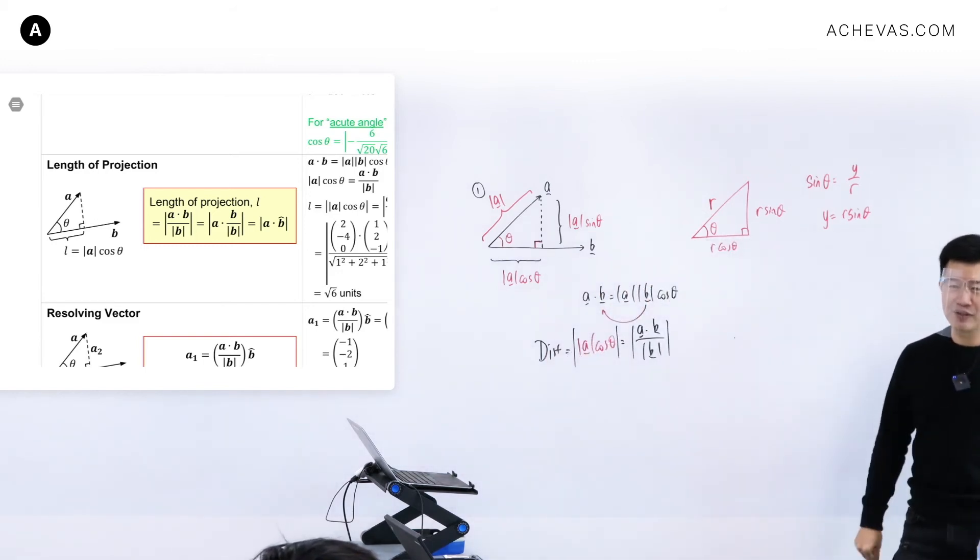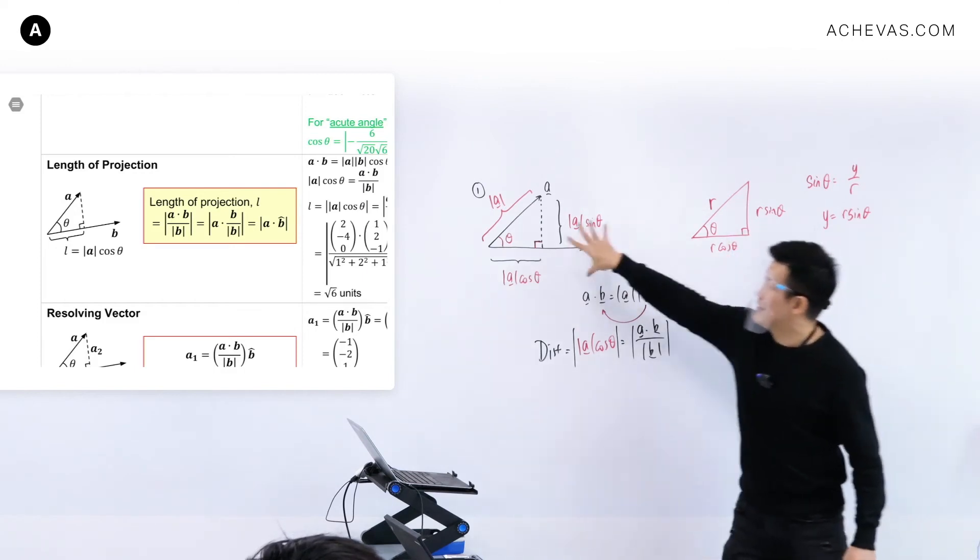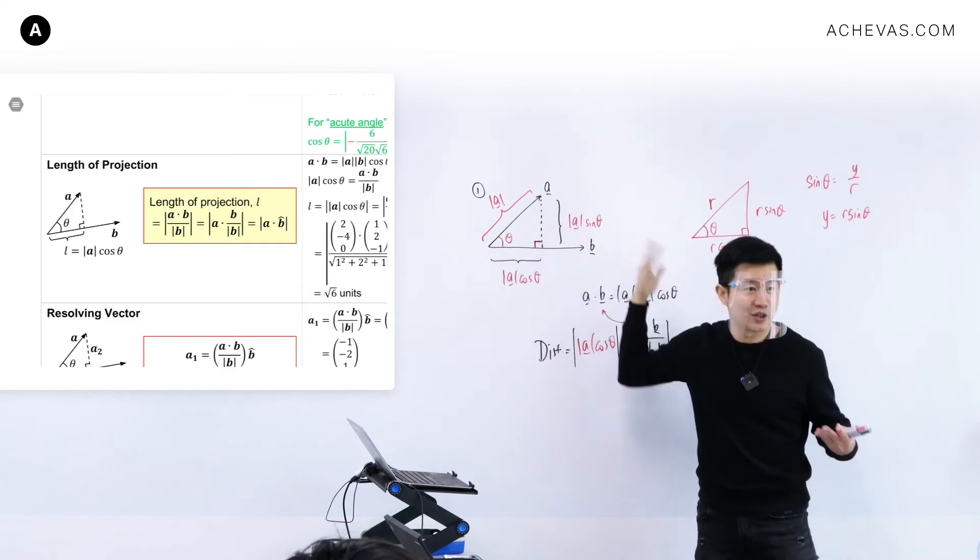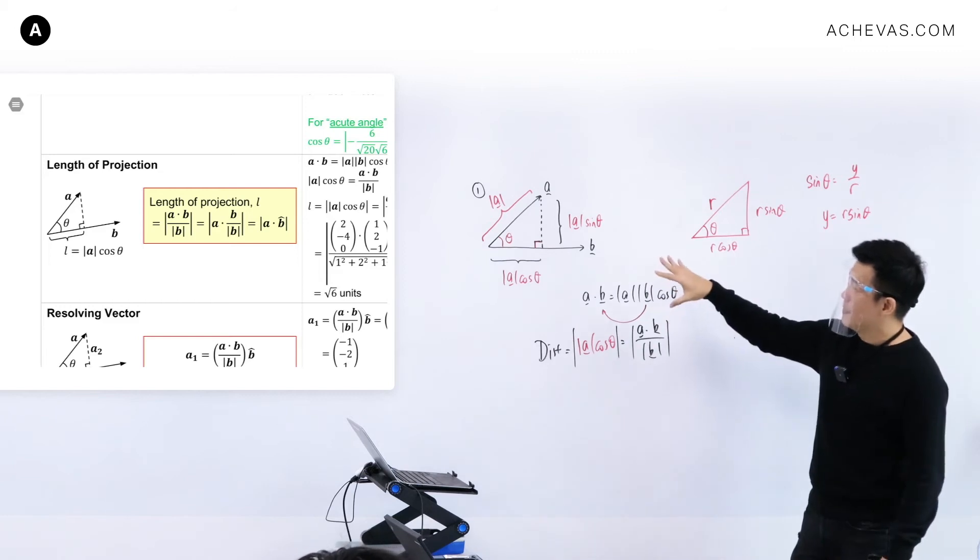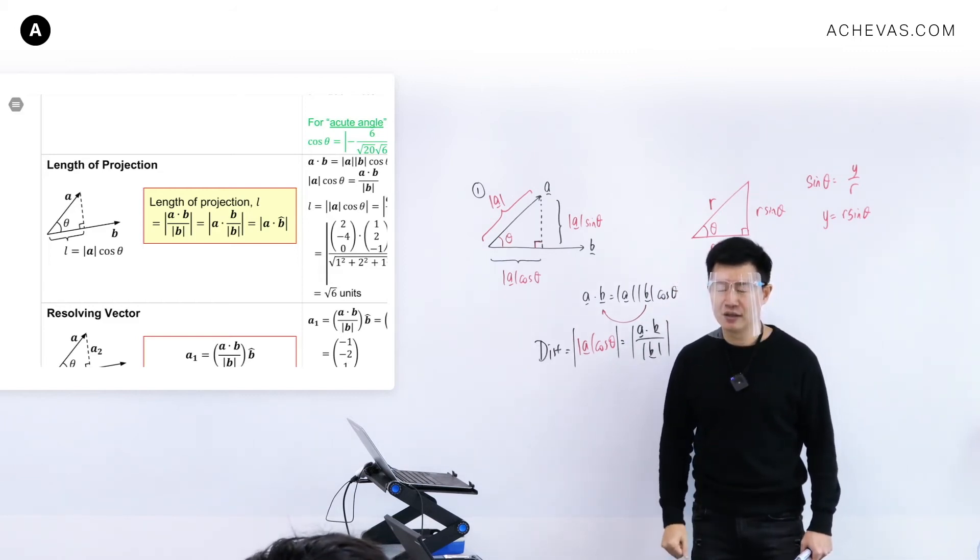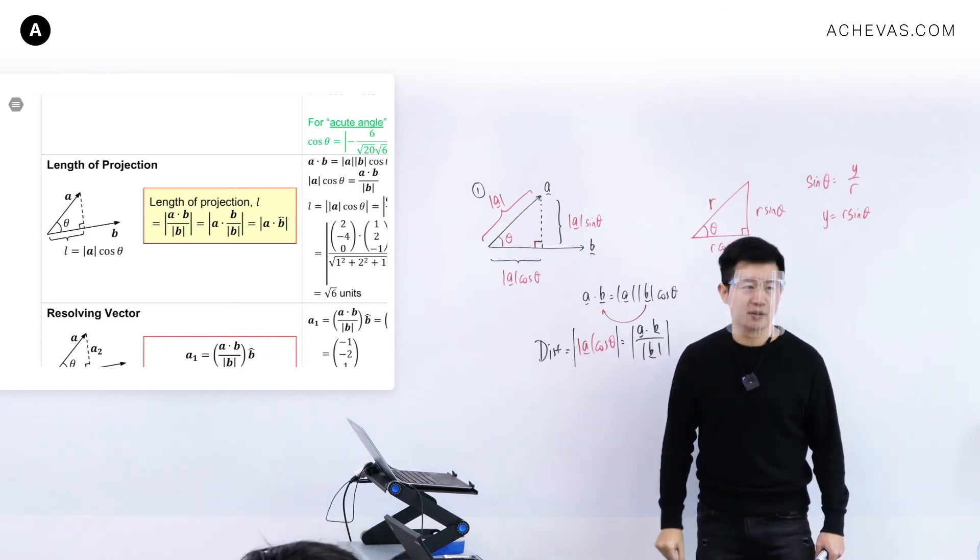Because some people, they cannot see that this is magical. Because, yeah, this is just a basic kind of scenario. Then you cannot tell that this triangle is so versatile that you can calculate all the distance that is in the entire vectors.